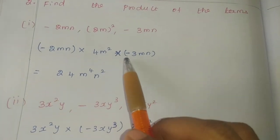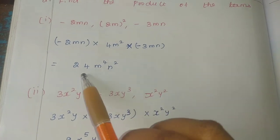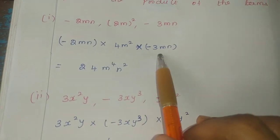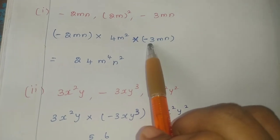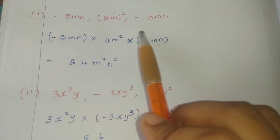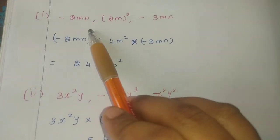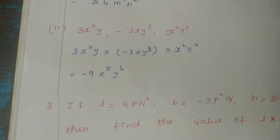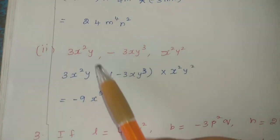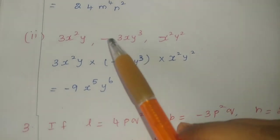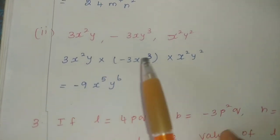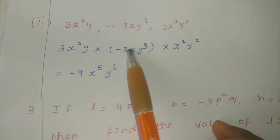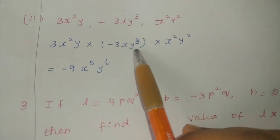We are going to present the symbols in the product. Minus into minus is plus. 2 times 4 is 8, times 3 is 24. For the powers of m: add the powers — m power 2 plus 1 gives m cubed. Like terms: add the powers. Minus into minus is plus.